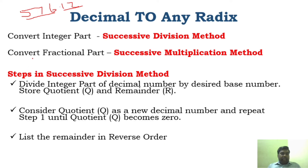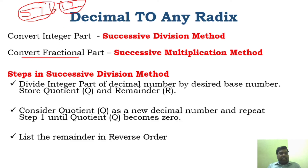You have to convert the integer part separately and the fractional part separately. For converting the integer part, use the successive division method. For converting the fractional part, use the successive multiplication method. Don't get confused — successive multiplication is for the fractional part only.